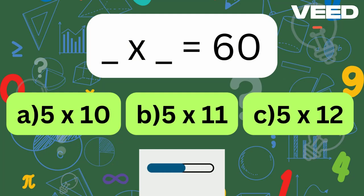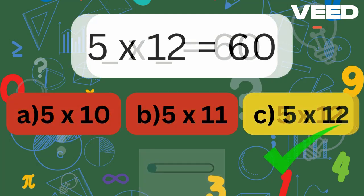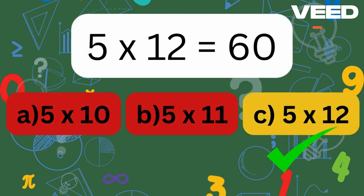What times what is 60? Excellent, 5 times 12 is equal to 60.